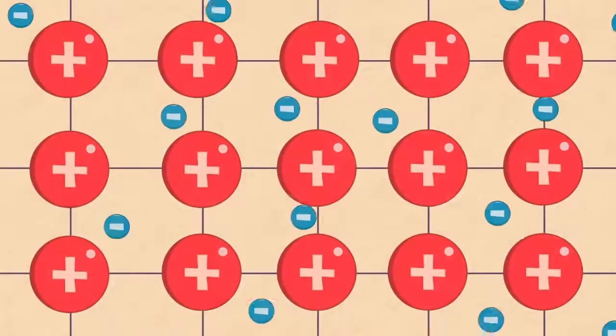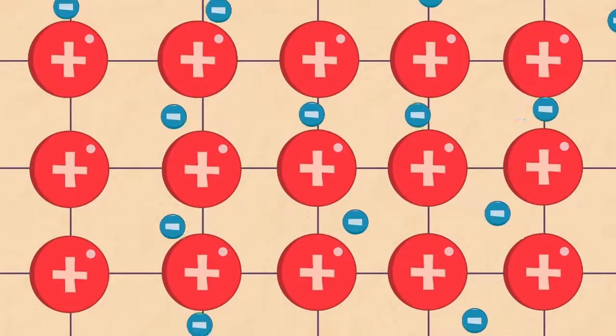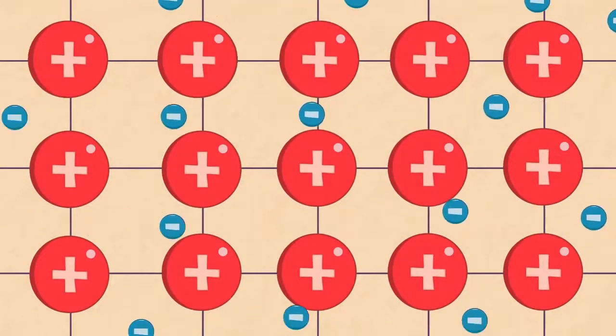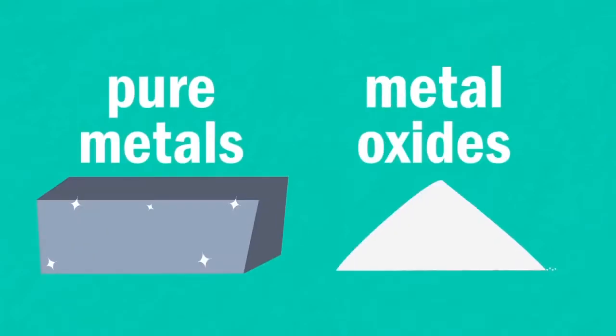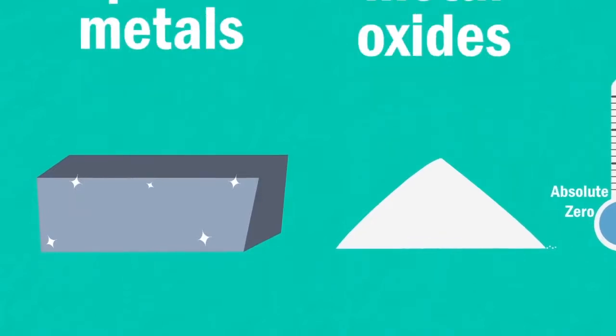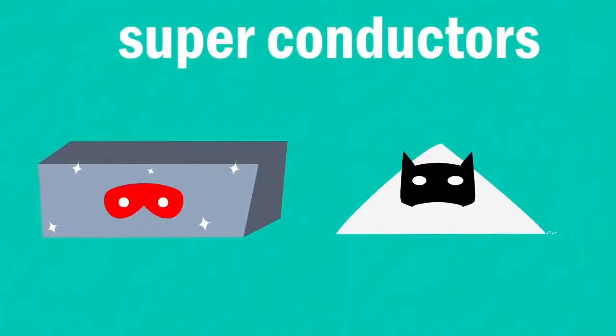Some materials offer hardly any electrical resistance to the flow of current or the movement of these electrons. These include some pure metals and metal oxides cooled to a few degrees above absolute zero. These are special conductors called superconductors.